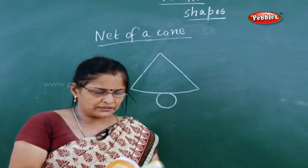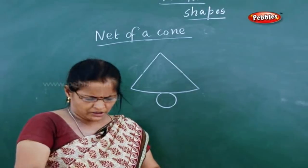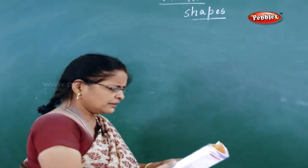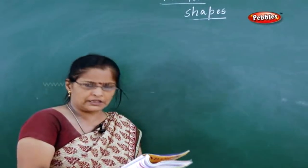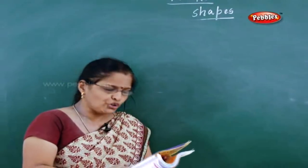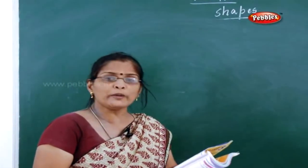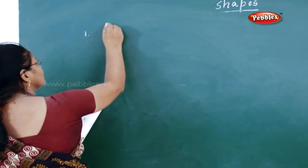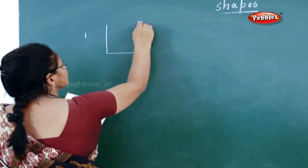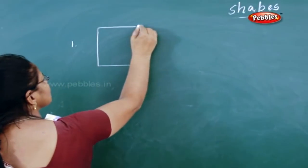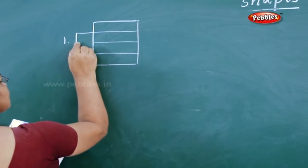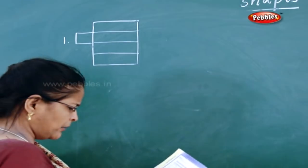Next there is a practice or activity given in your book. Take page number six. There are six diagrams given. What you have to do is draw an arrow mark to match the net with the shape which you will get when folded. The first one - this is the shape given.